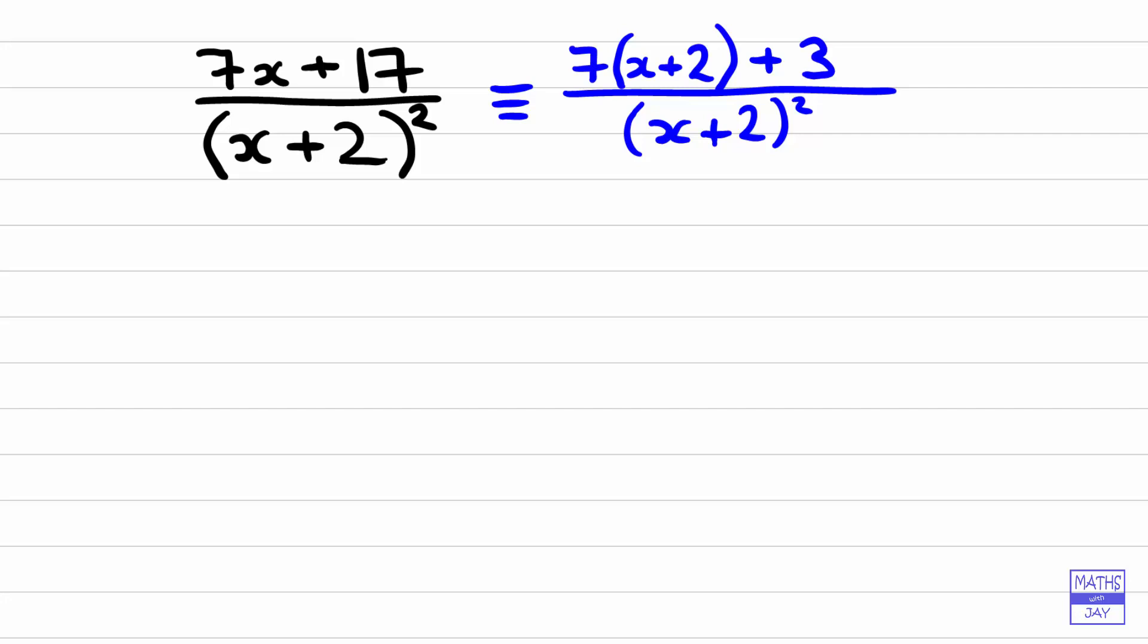So that bit is the hard work. Once you've done that, then the rest is simple to do. Because we can now separate this out into two fractions. So the first one will be the 7 times x plus 2 over x plus 2 squared. And then the other one is just the 3 over x plus 2 squared.